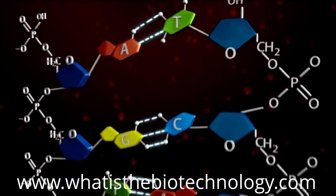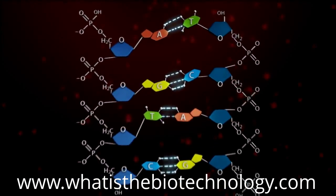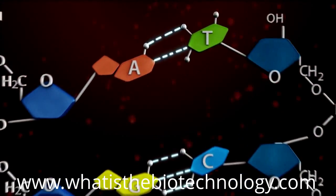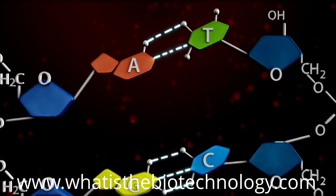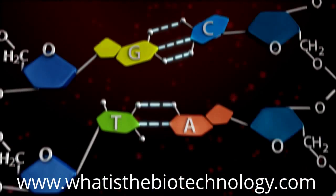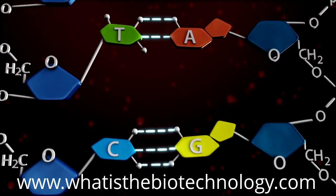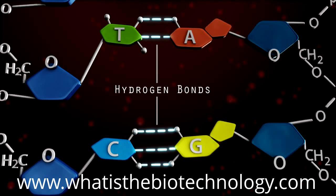DNA is a double-stranded molecule. Notice that adenine (A) forms bonds with thymine (T), and guanine (G) forms bonds with cytosine (C). The bonds that hold these two strands of DNA together are highlighted in light blue and are called hydrogen bonds.